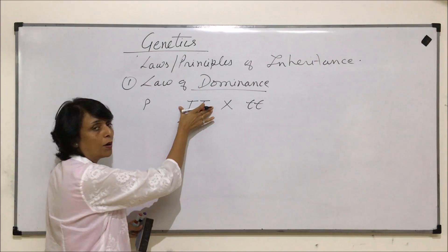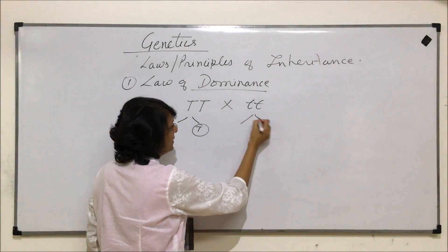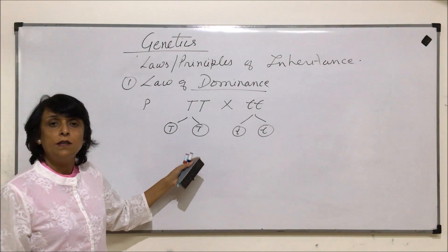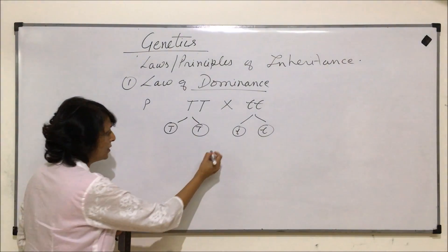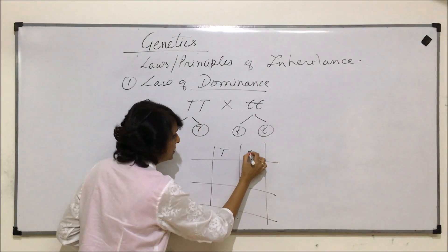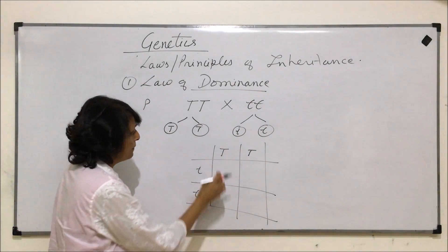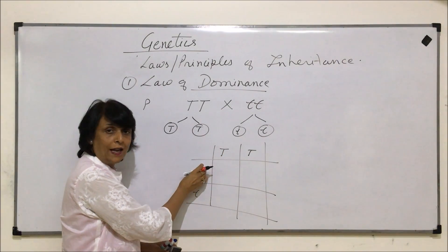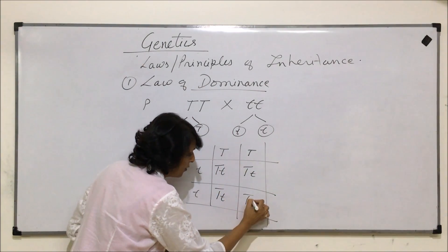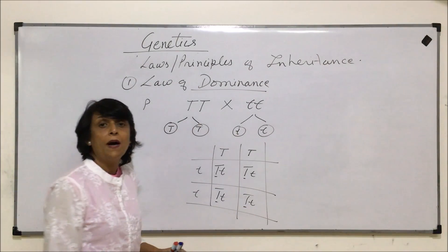The gametes produced by the tall plant would carry the dominant allele (capital T), whereas the gametes from the short plant would carry the recessive allele. When we plot a Punnett square to see the genotype of the offspring, we write the gametes from each parent on either side. The offspring genotype is going to be heterozygous in all four cases. But phenotypically, due to the presence of the dominant gene, all of them are going to be tall.